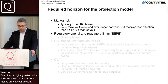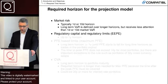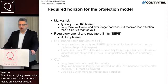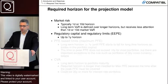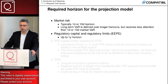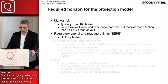For regulatory capital and regulatory limits, the effective expected positive exposure for default capital has a horizon of up to one year. Regulatory limits are limits defined based on risk-weighted assets — the firm decides to limit how much RWA can be taken when trading with a specific counterparty. Regulatory limits are simply limits established either on the basis of regulatory capital or the effective expected positive exposure, which is related to one component of regulatory capital.